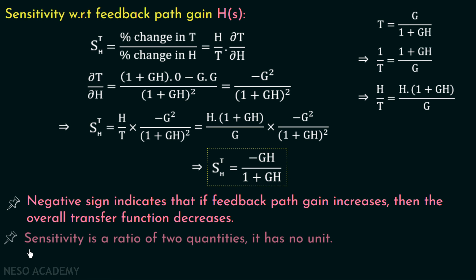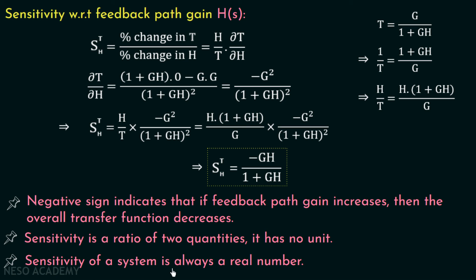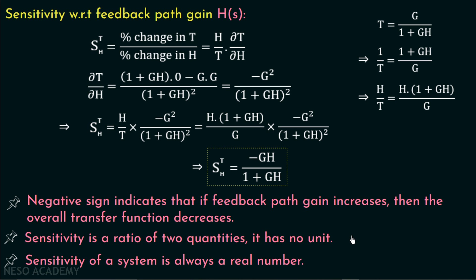Moving on to some more important points: sensitivity is a ratio of two quantities and that is why it has no unit — it is a unitless quantity. Also, the sensitivity of a system is always a real number; it cannot be a complex number. So now we have discussed the sensitivity with respect to forward path gain and with respect to feedback path gain, and we are done with the introduction of sensitivity of control systems. We will solve some problems based on sensitivity of control systems in the upcoming lectures.